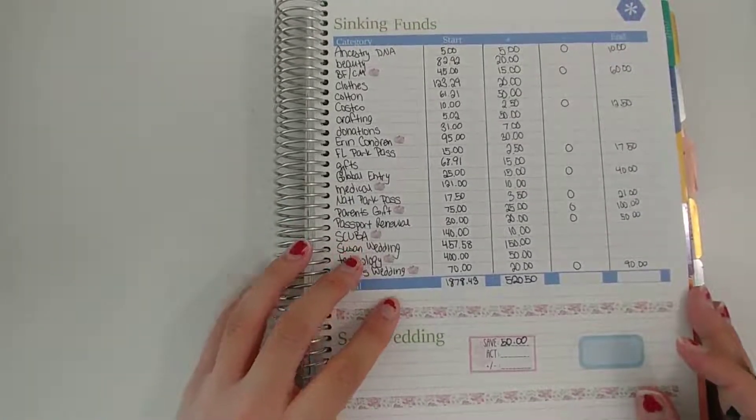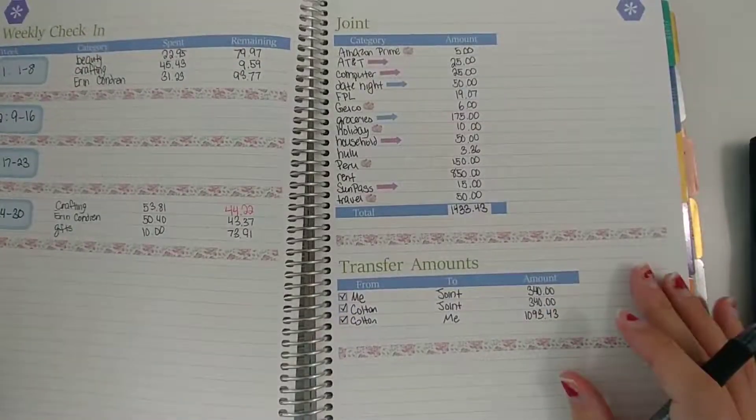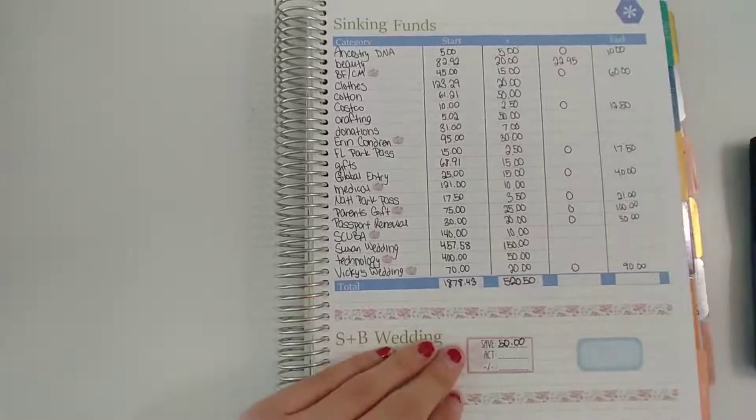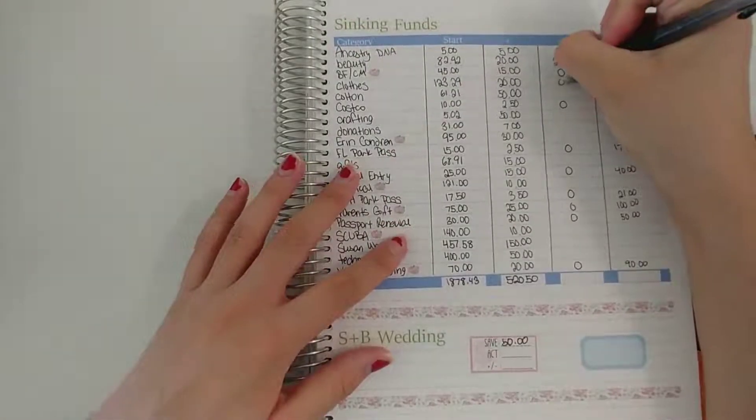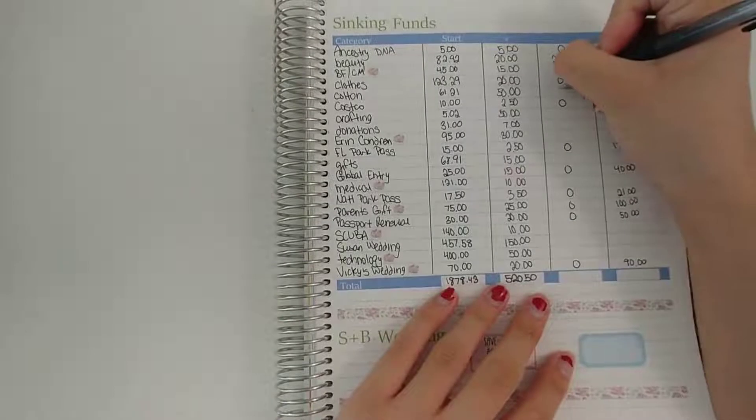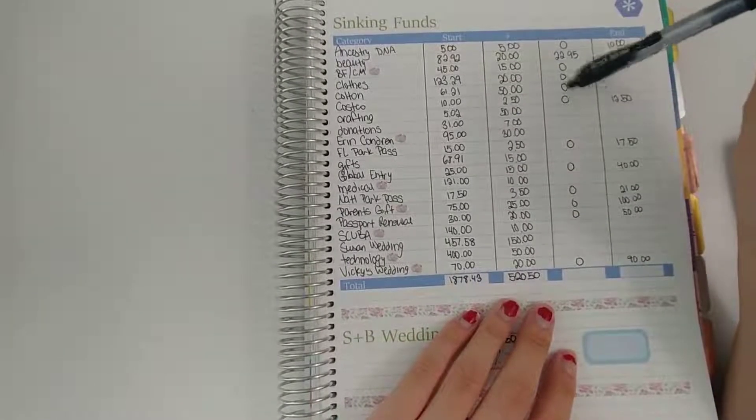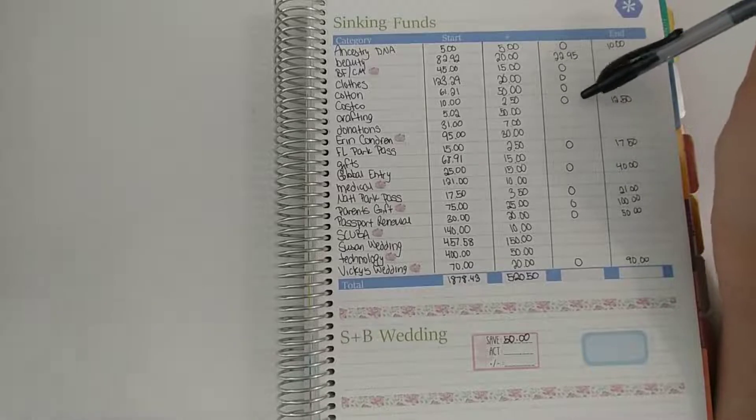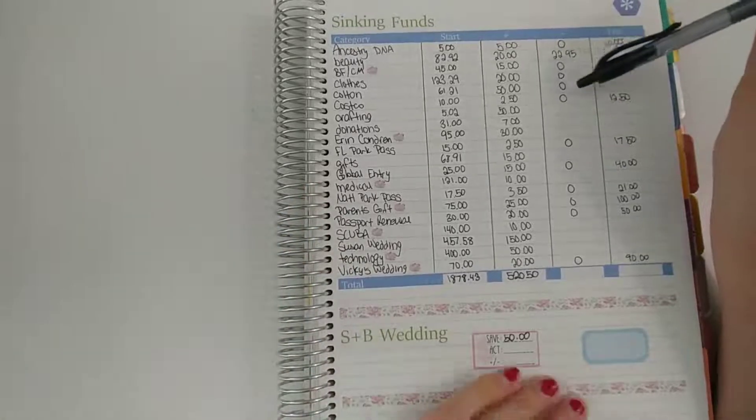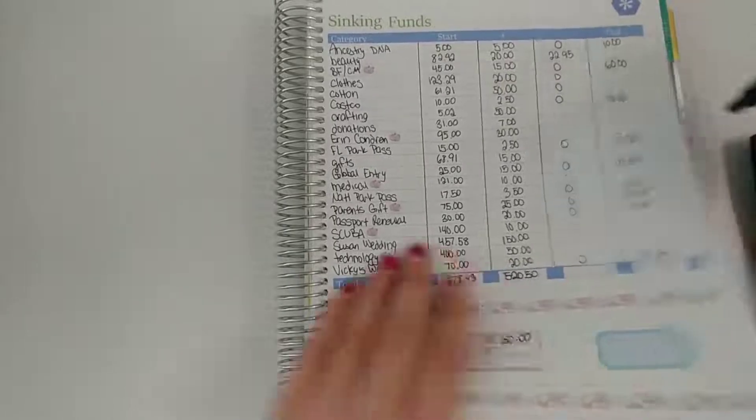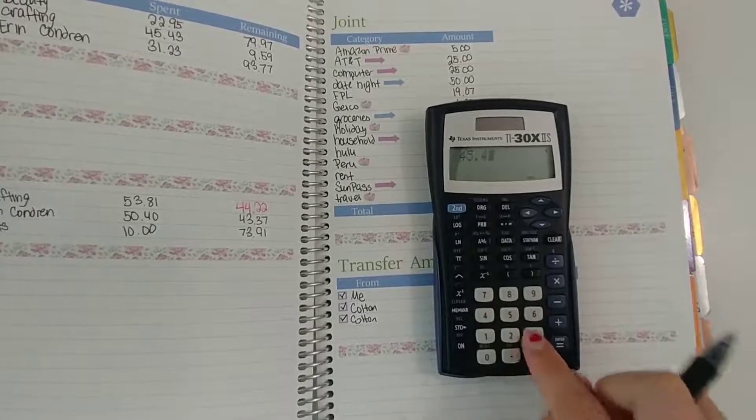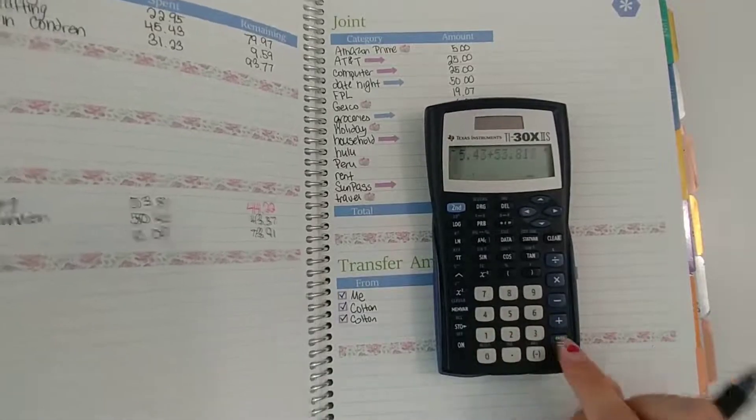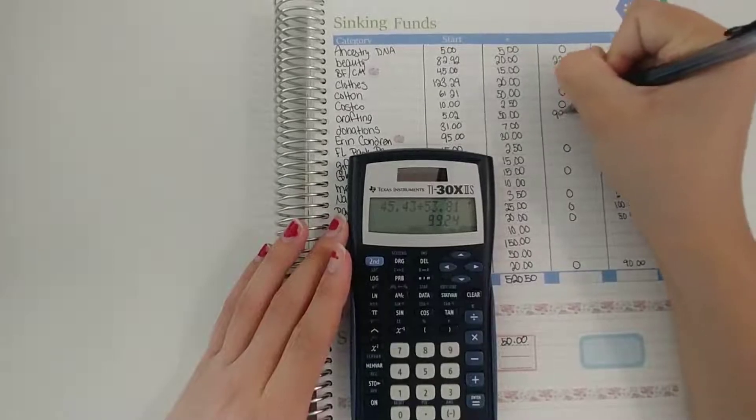And then here we are for sinking funds. I know I spent something for beauty. I spent $22.95 in beauty. Clothes, I don't think I spent anything. Colton, I don't think I did yet. So his birthday is next month. And our anniversary was this month which I was supposed to buy something but because of the virus the shop that I'm going to get it from is closed. I'm going to wait for them to reopen to purchase that. And his birthday gift they haven't purchased yet. Crafting, I spent $45.43 the first week and then $53.81 the second. So crafting this month I spent $99.24.